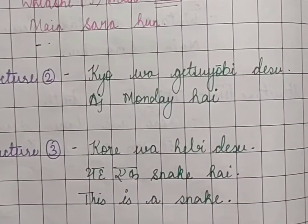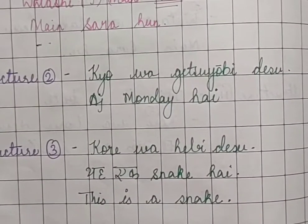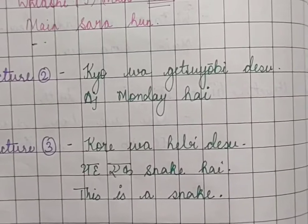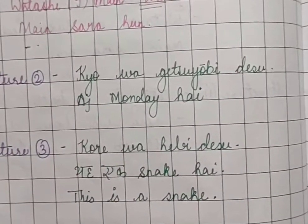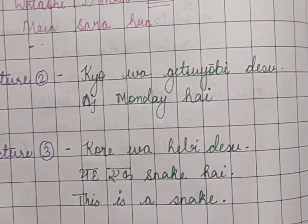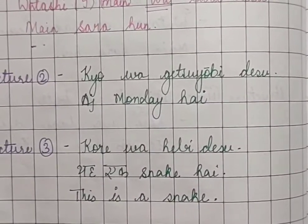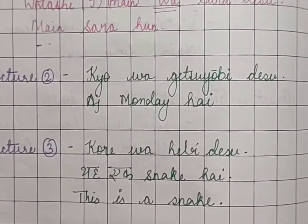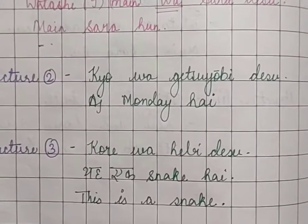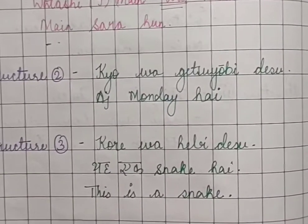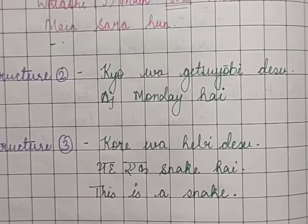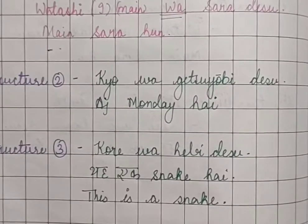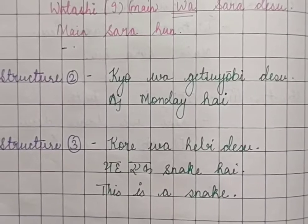Next: 'Kore wa hebi desu' — here is a snake in Japanese. In English we say 'this is a snake.' You might wonder why not use 'here is a snake' like in Hindi, but when we convert it into English we say 'this is a snake.' Every language has a different structure, and Japanese structure is straightforward: 'Kore wa hebi desu' — this is a snake.